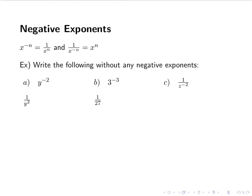1 over z to the negative 2 follows this rule. I have a negative exponent, so I take the reciprocal — giving me a double reciprocal — which means it's just z to the positive 2.